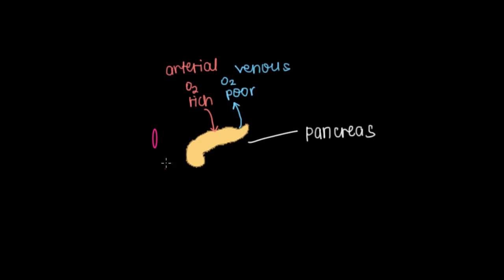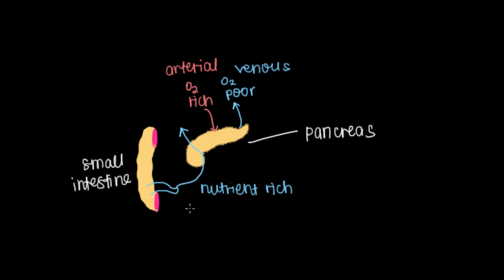But in addition to these two things, the pancreas also receives blood flow from the intestine, which I can draw right here. The small intestine will deliver unique nutrient-rich blood through the pancreas. And this is nutrient-rich blood through the portal venous system.